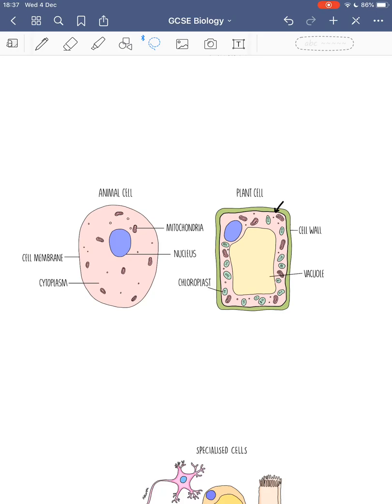Hopefully you got all of those right — if not, rewind and try again. Also, if you go to our website on the biology page, there's a cell labelling activity you can print off and add to your revision notes. And if you're studying the double award, you can stop the video here. Everything else in the remainder of the video only applies to students studying the triple award specification.